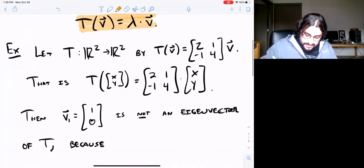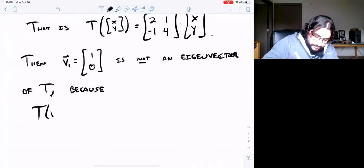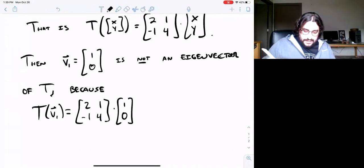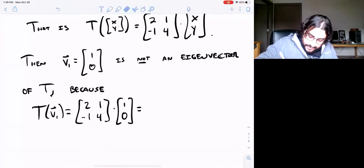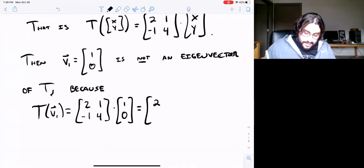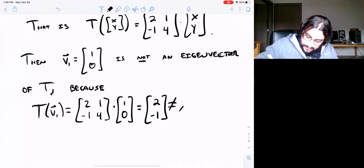Well if we tried plugging that in to our function here, you'd have T(v1) is this matrix [2, 1; -1, 4] times (1, 0). And if you just do the matrix multiplication here, what do we get? Well we have 2 in the first row and we have -1 in the second row.